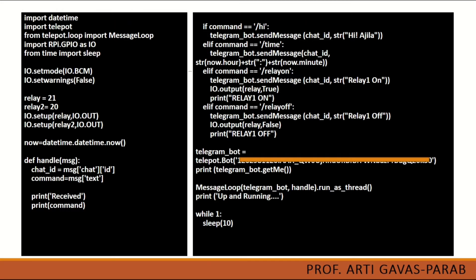For the software requirement we need Python IDE to code our home automation program. In the program, we import the required packages. One thing to note is that we are importing the package rpi.gpio as io — 'io' is the object name I have used.